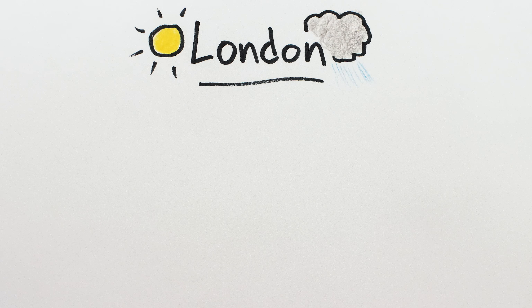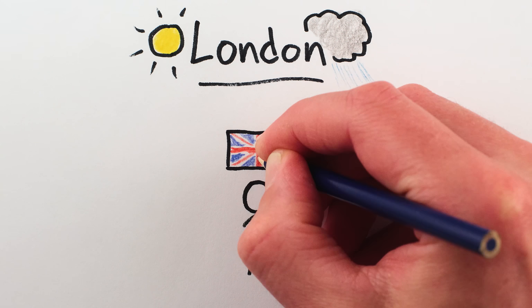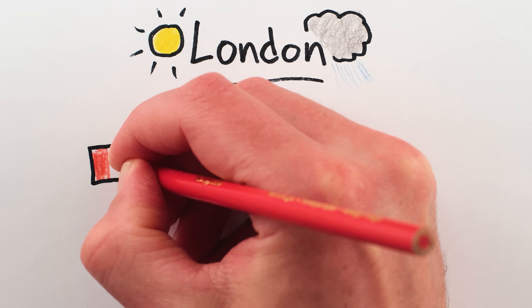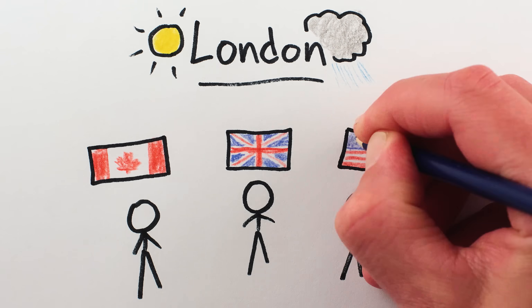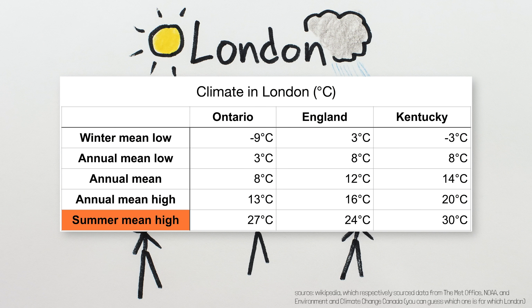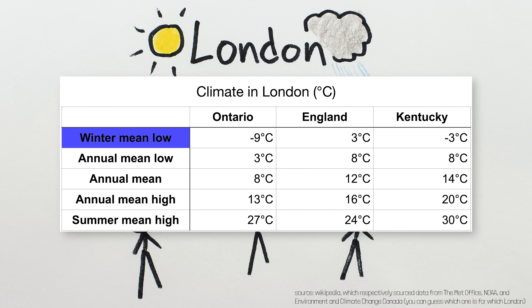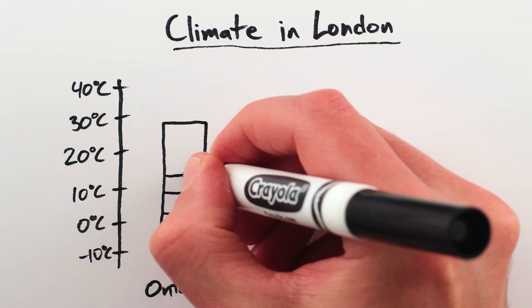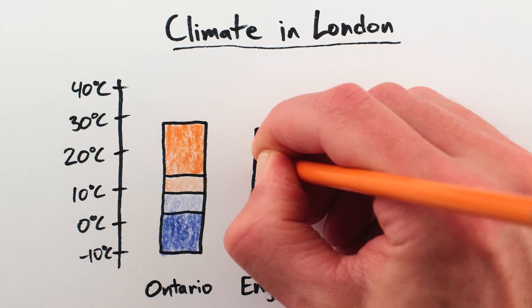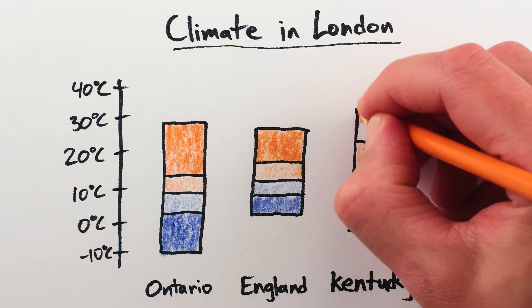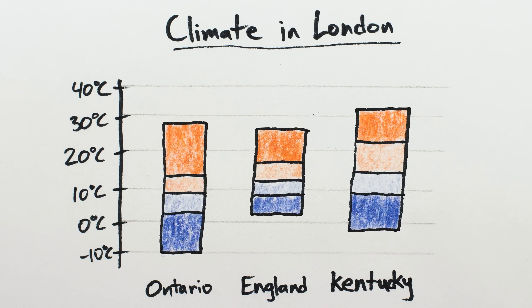Suppose you want to compare the climates of London, England, London, Ontario, and London, Kentucky. Here's a table showing the average and seasonal high and low temperatures for each London. But tables are boring. If you wanted to plot this data by hand, you might imagine using a chart like this to show the range of temperatures, and allow you to see at a glance that the climate in London, England is less extreme than the other Londons.